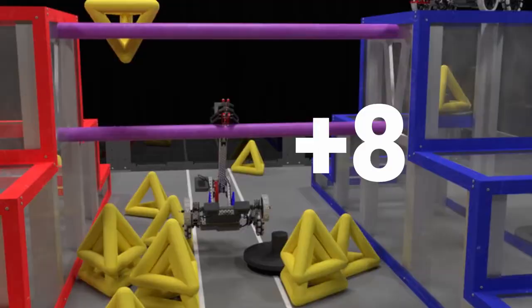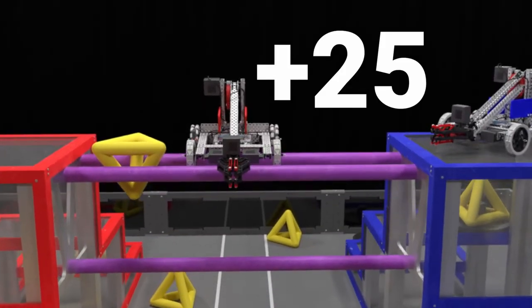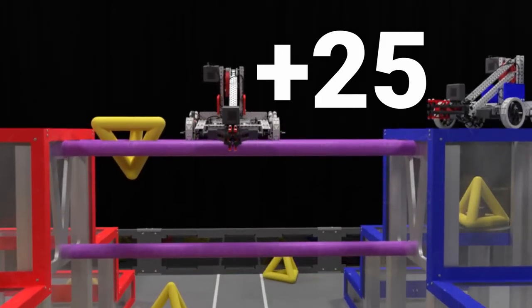For bridge parking, a robot must be completely above low bar, only supported by the high bars, and will receive 25 points.